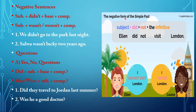The negative form of the past simple: subject plus did plus not plus the infinitive — the base verb. For example: Ellen did not visit London.